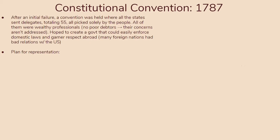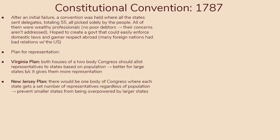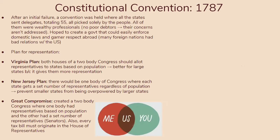How are we going to represent the people's opinions while also giving some authority to a select group of individuals? In Virginia, they came up with the Virginia Plan, where both houses of a two-body Congress would allot representatives to states based on population — obviously better for larger states. New Jersey countered with the New Jersey Plan, which said there would be one body of Congress where each state gets a set number of representatives regardless of population, preventing smaller states from being overpowered. Eventually, this led to the Great Compromise, which created a two-body Congress: one house with representatives based on population, and the other with a set number of representatives called senators. Also, every tax bill must originate in the House of Representatives, giving more power to the people in terms of taxation.